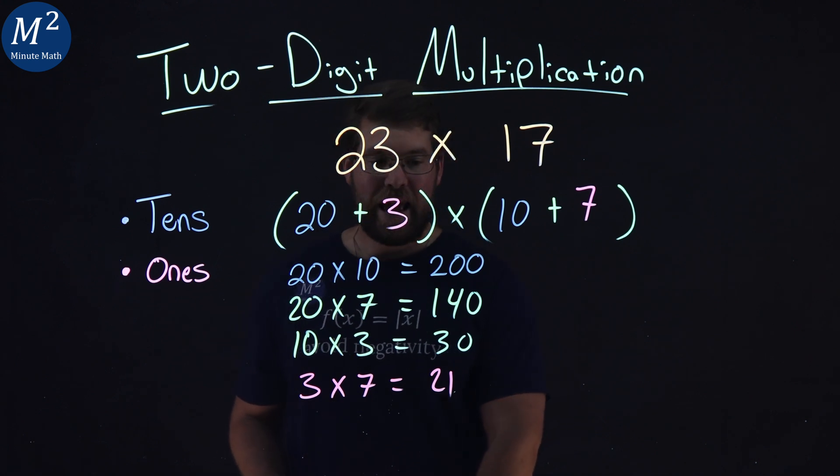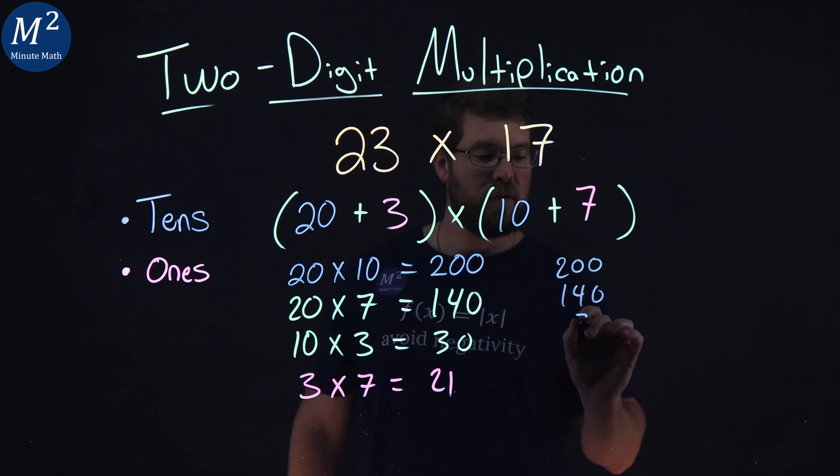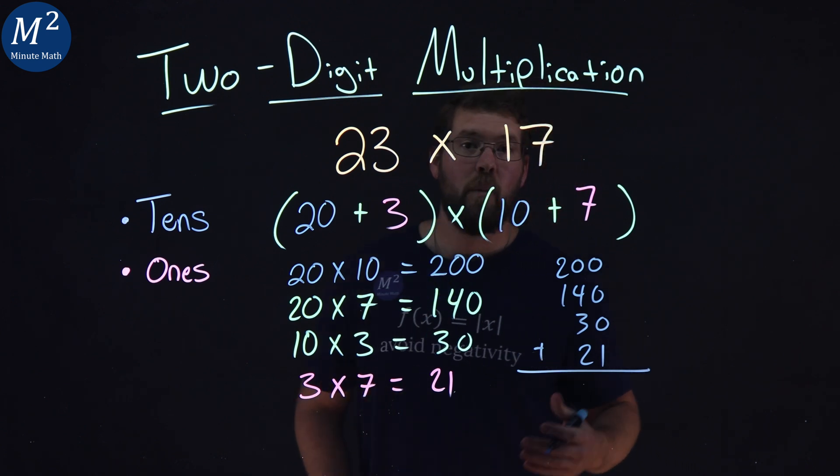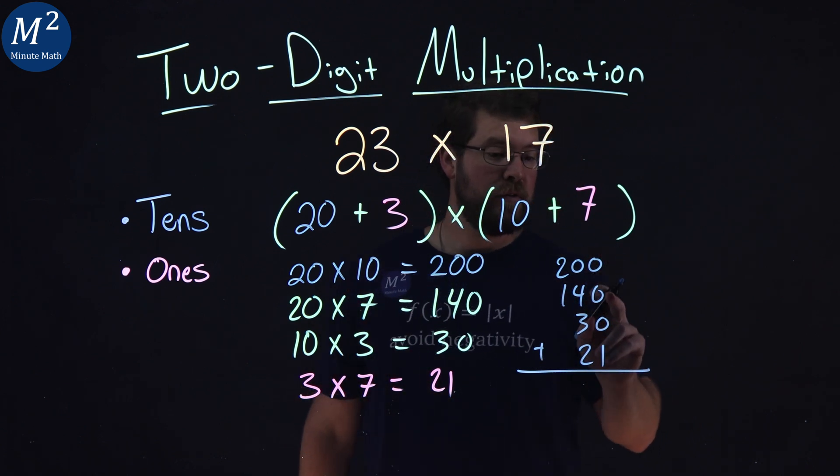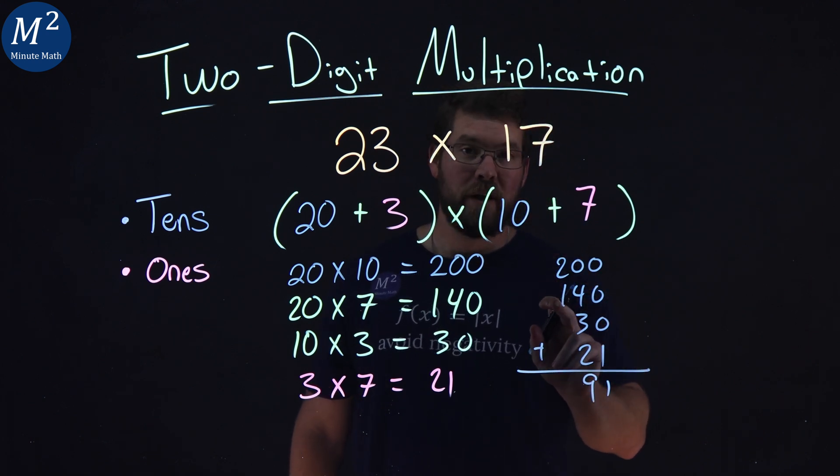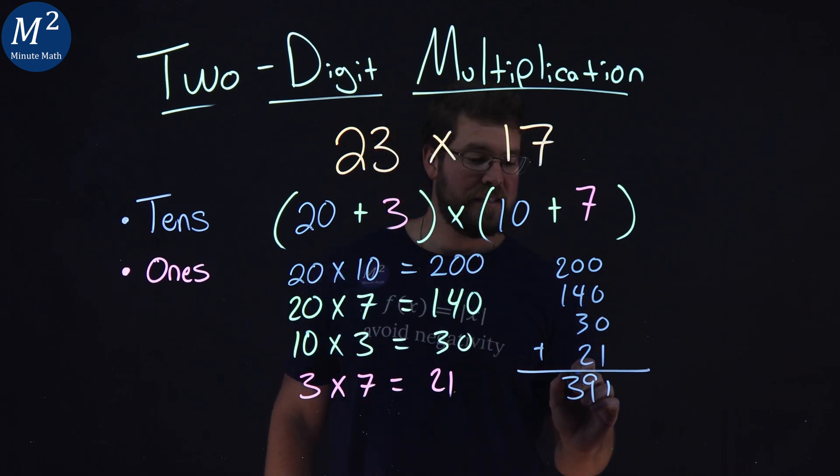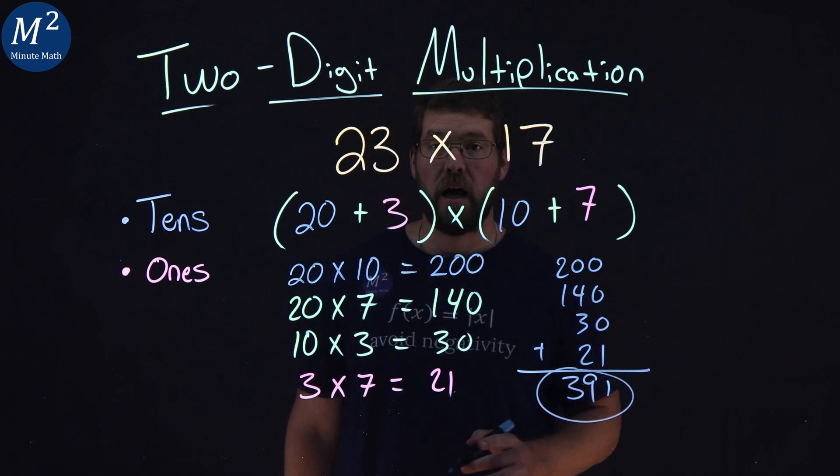I now want to add all of these numbers up. We take 200 plus 140 plus 30 plus 21. When we add all of these numbers up, 0, 0, 0, 1 is 1, 0, 4, 3, 2 is 9, and 2 and 1 make 3. And so, 23 times 17 is 391.